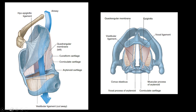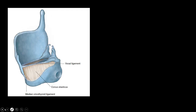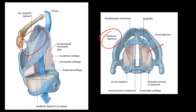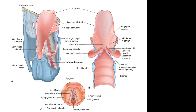Talking about the intrinsic ligaments of the larynx: one is the hyoepiglottic ligament, then you have the vestibular ligament which forms the false vocal cord — it is basically the inferior border of the quadrangular membrane. The space between the laryngeal inlet and the vestibular fold is known as the vestibule.